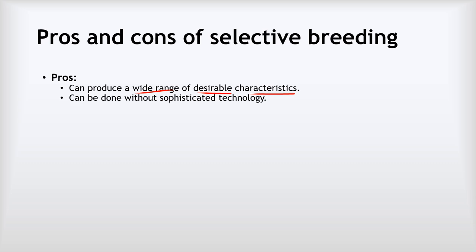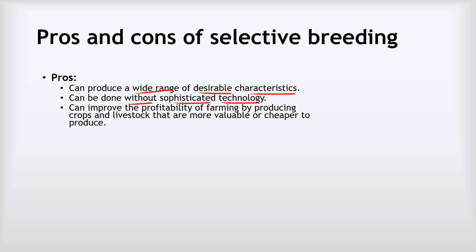Importantly, it can be done without sophisticated technology. This isn't done by scientists in a lab — it's done by farmers working on their farms as part of their daily business. Farmers have been doing this for literally thousands of years without any technology whatsoever. Also, selective breeding can improve the profitability of farming by allowing them to produce crops and livestock that are either more valuable — so they can sell them for more money — or cheaper to produce, or both.